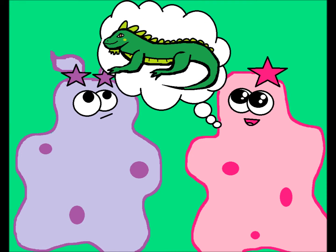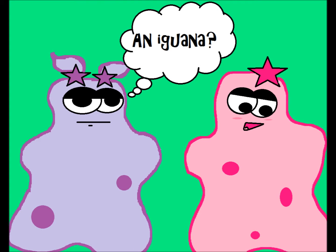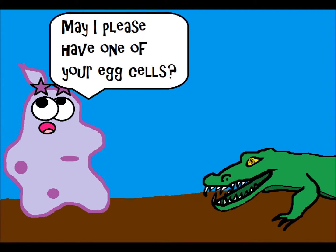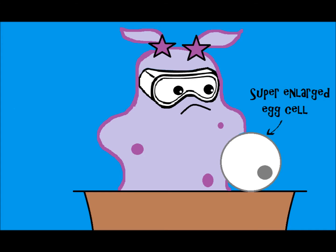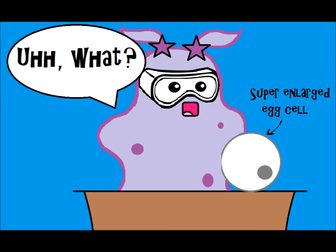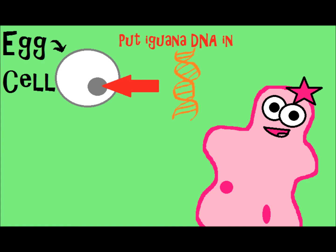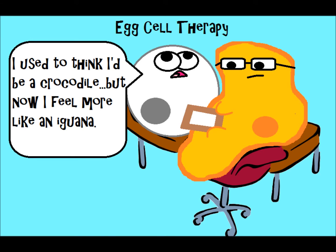Say, for example, you wanted to clone an iguana. You would need to have a reptile egg cell, take the DNA out of that egg cell — making it kind of like an empty slate — and then put the iguana's DNA inside it. That egg cell is basically now programmed to develop into that iguana.